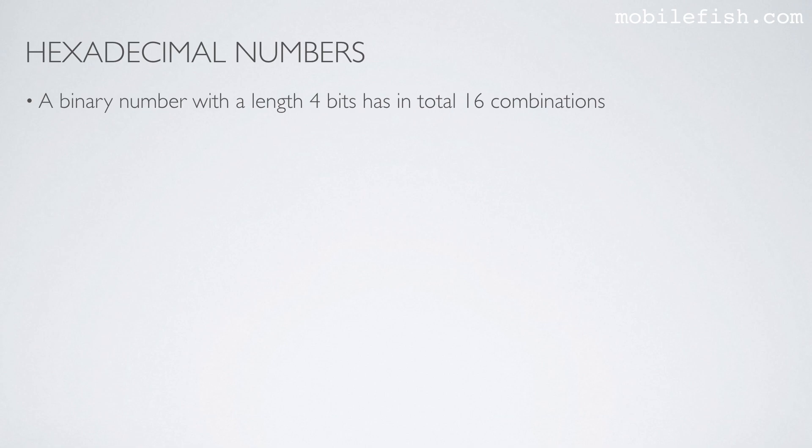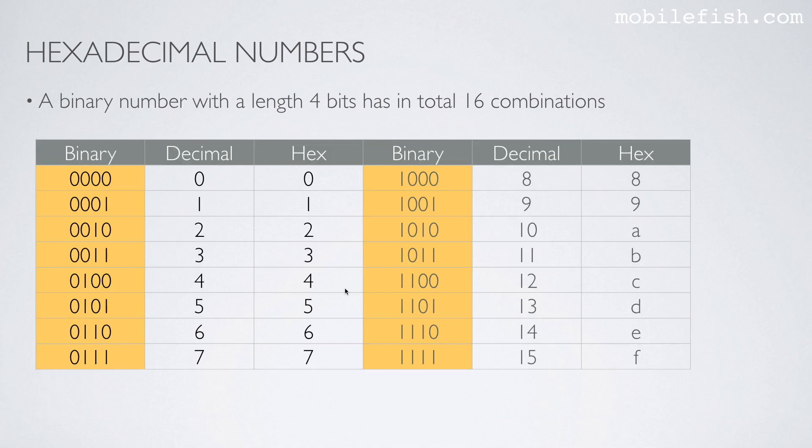If we have a binary number with a length of 4 bits, it has in total 16 combinations, as you can see over here. Here is a binary number with a length of 4 bits, and you can see there is a total of 16 combinations. Because it has 16 combinations, it can be represented by one hexadecimal symbol, as you can see over here.